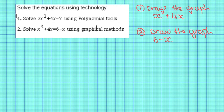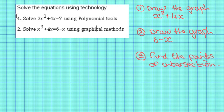To do this, first we have to draw the graph x cubed plus 4x. Secondly, we have to draw the graph 6 minus x. Thirdly, find the points of intersection.